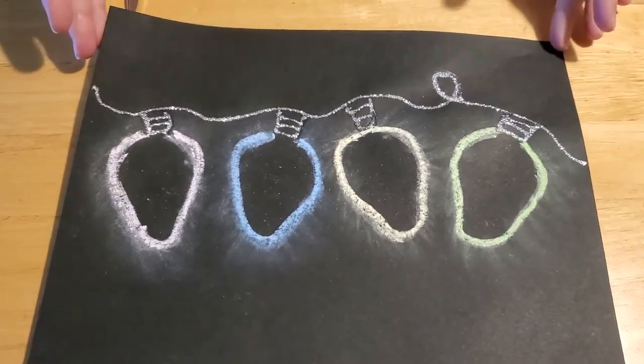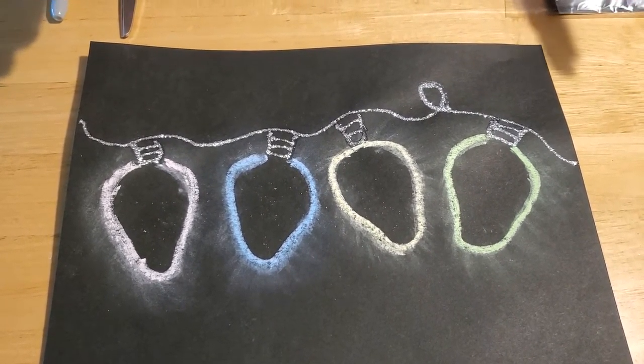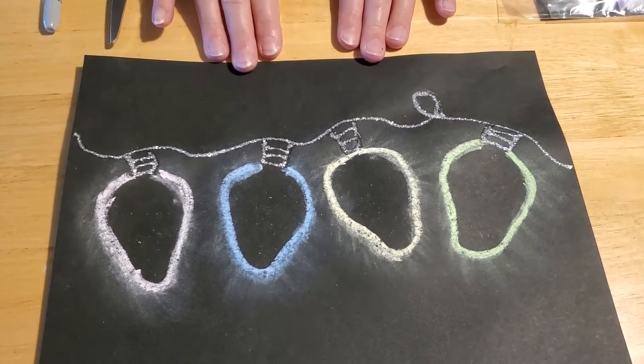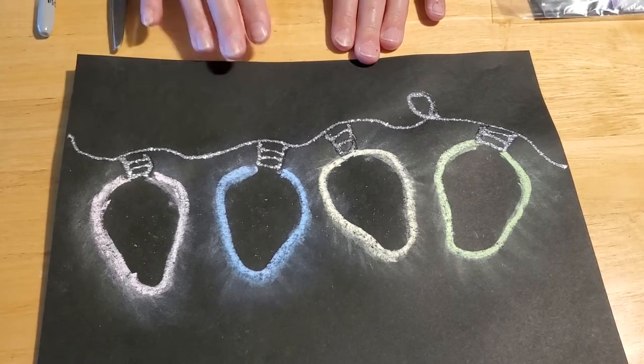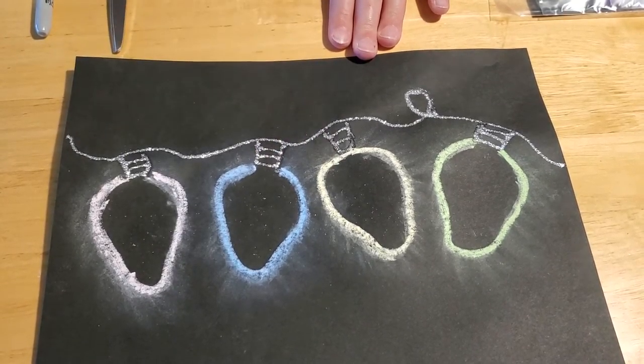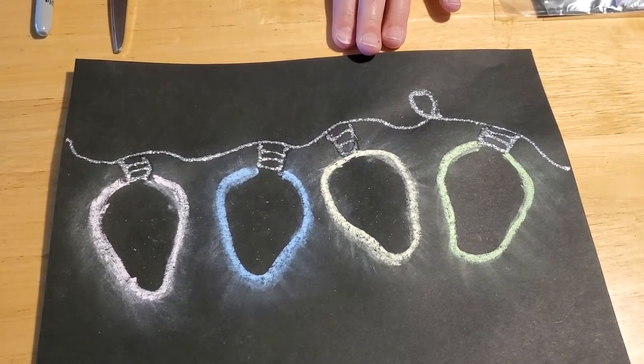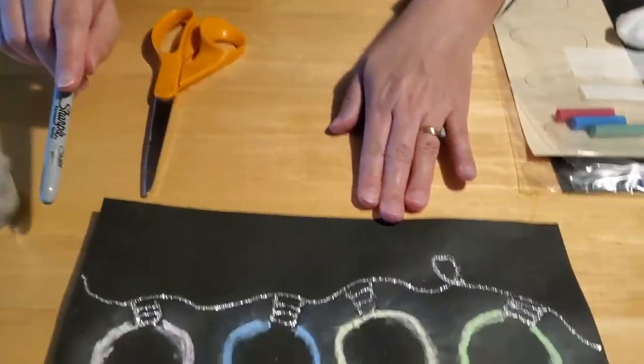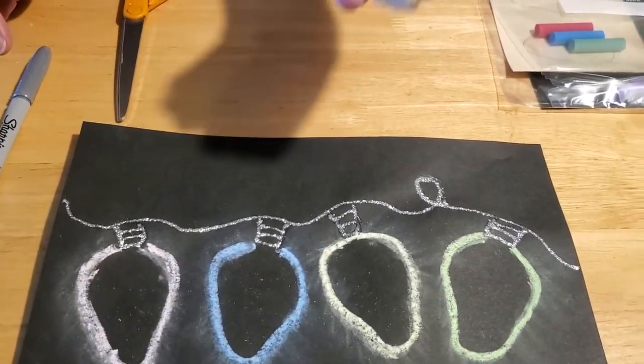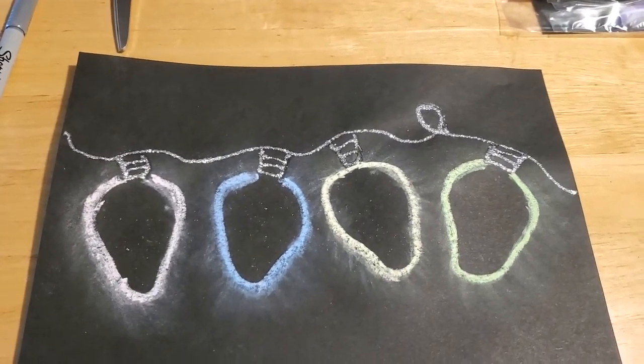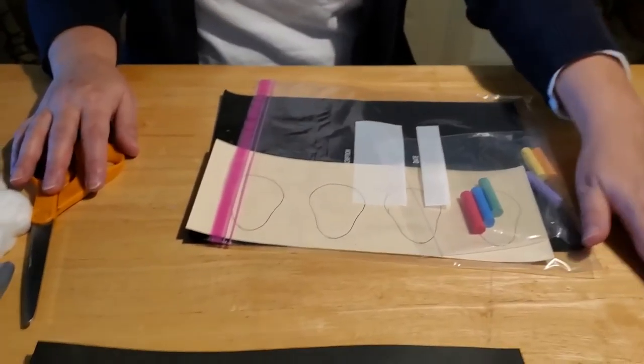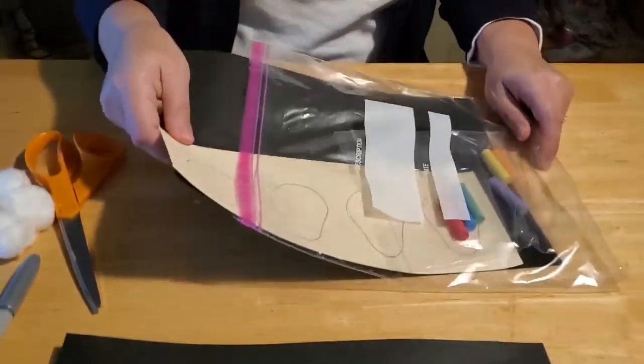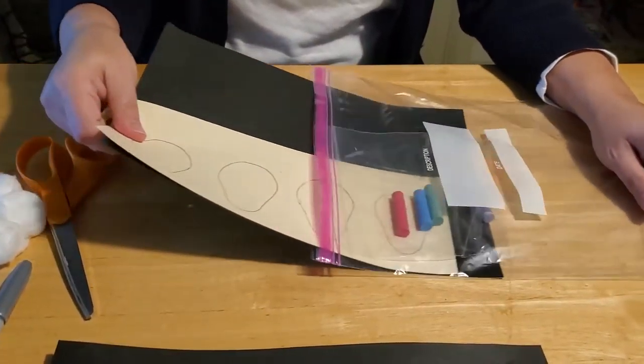So what we're going to do is, if you don't have the opportunity to come down to the library to get a craft kit, you're going to need a sheet of black construction paper, you're going to have to cut out a lightbulb template, and then you're either going to need silver glitter glue or a silver marker so that you can make the wire to connect them all to. You're also going to need some cotton balls, and this is a really easy craft to make.